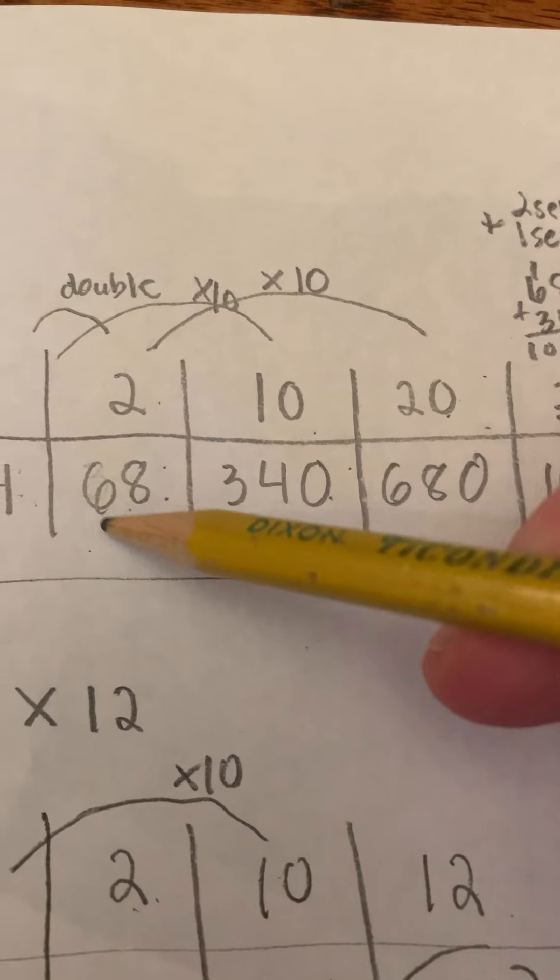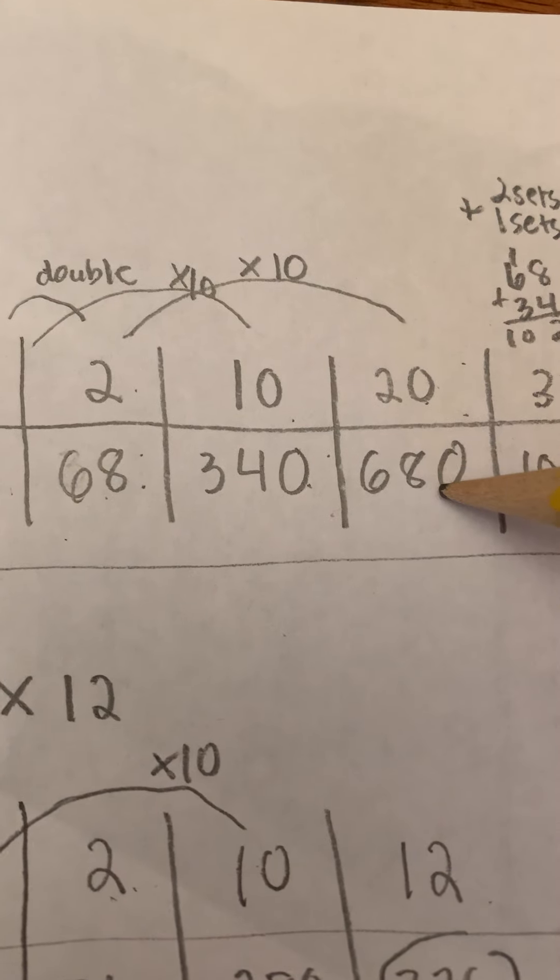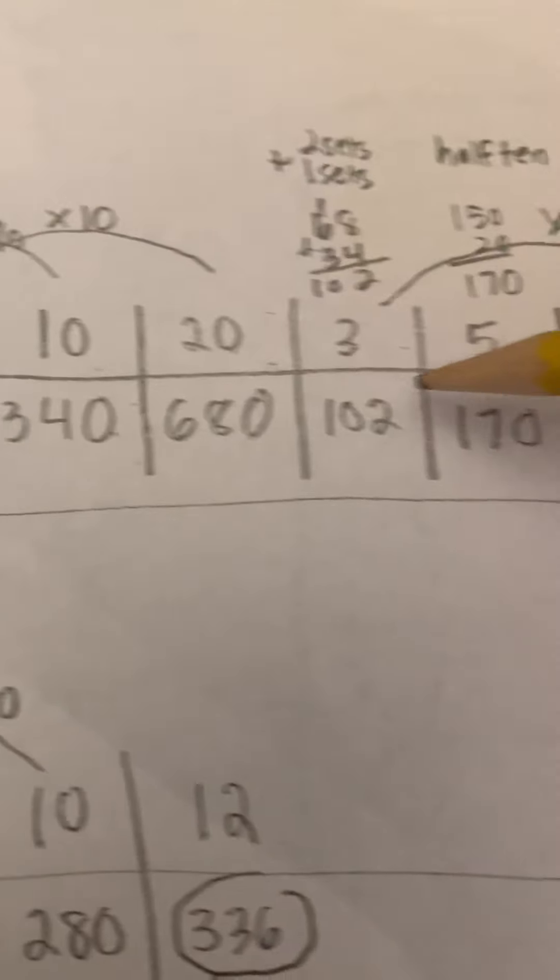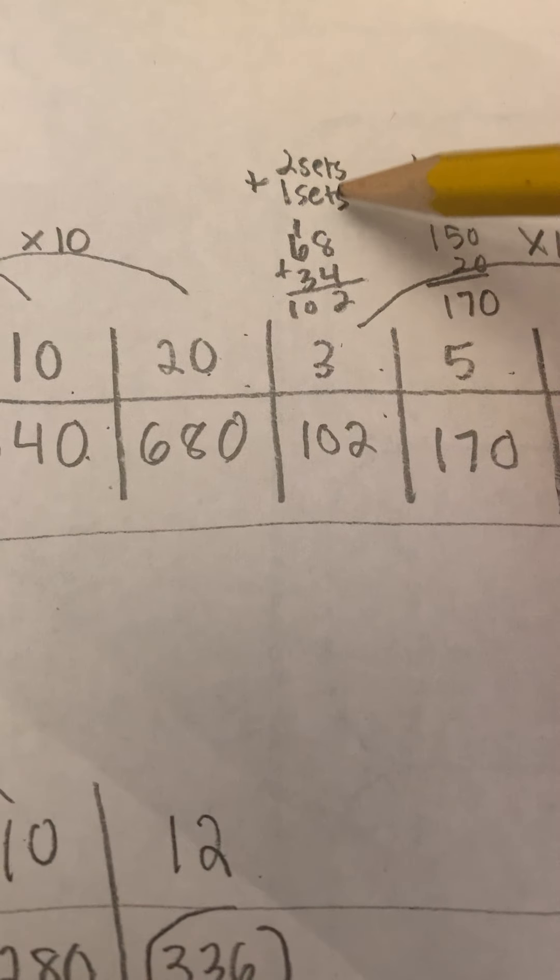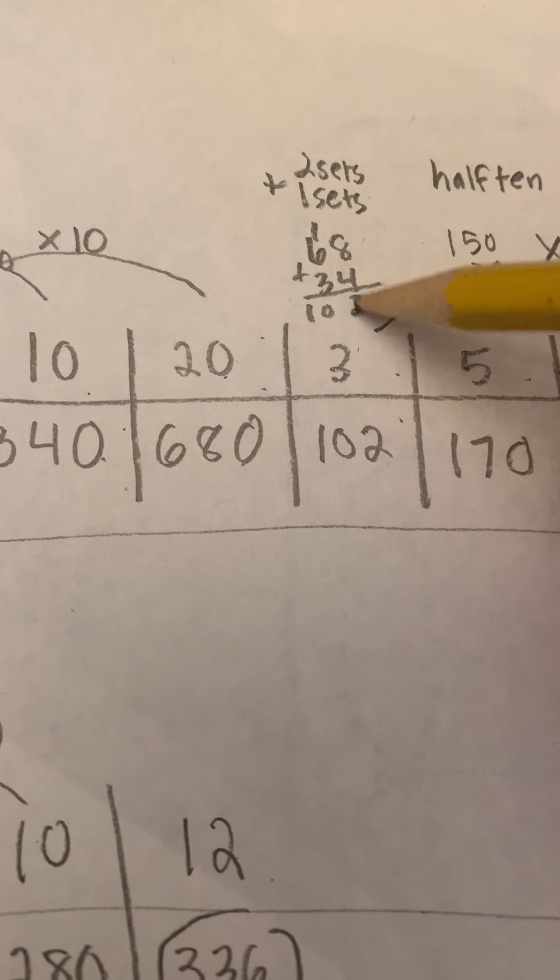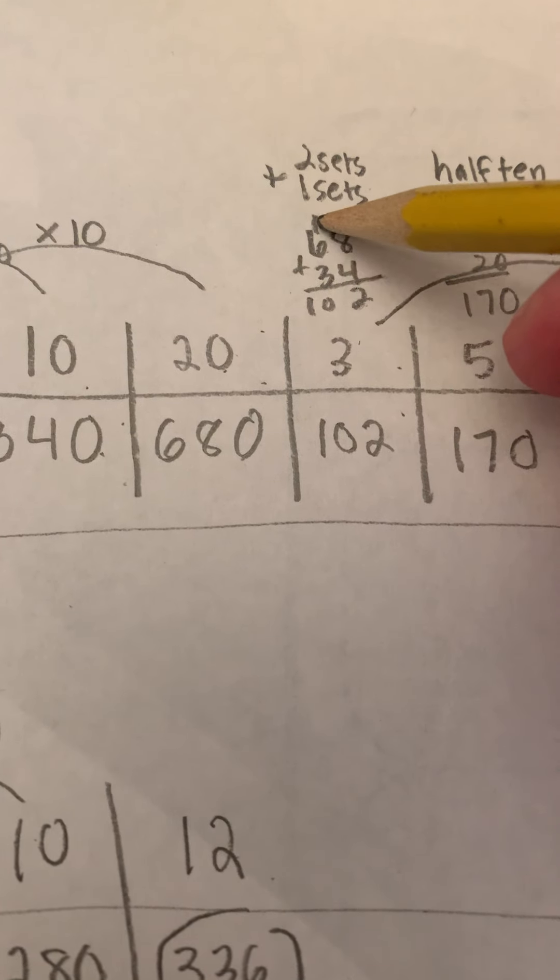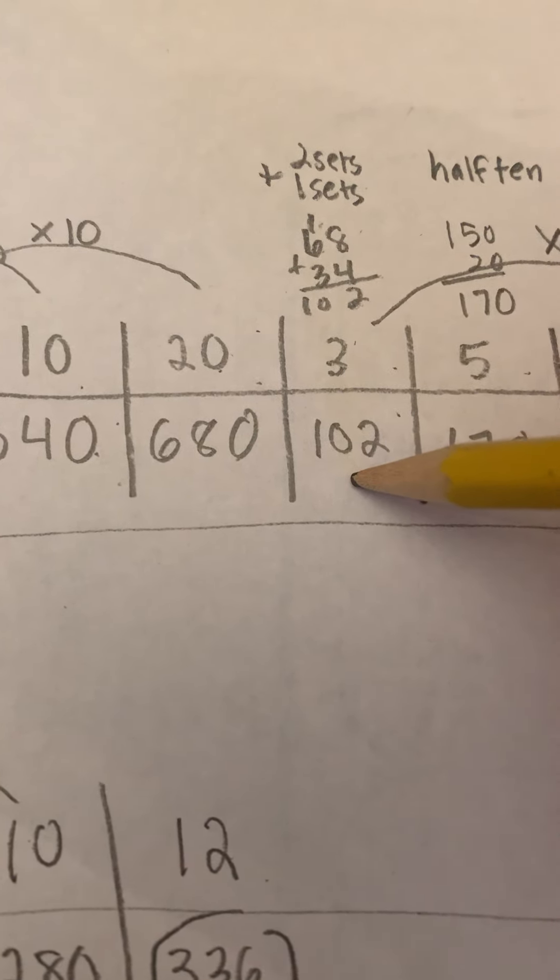Multiplying by 20, I take the 68, move it over, put the 0 to hold the place. 3 sets, I do 2 sets plus 1 set, 68 plus 34, 8 and 4 is 12, carry the 10, 6, 7, 8, 9, 10, 100, 2.